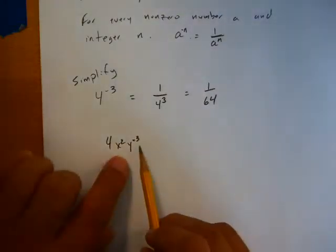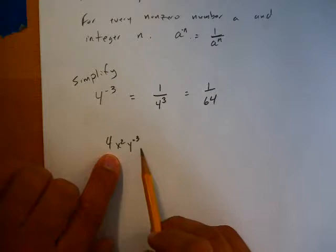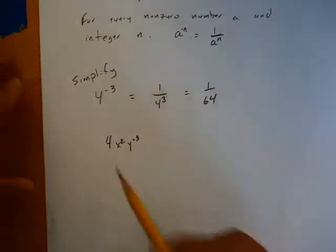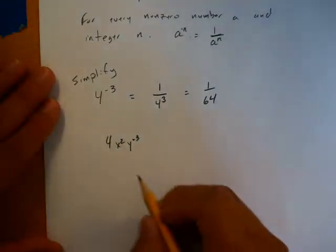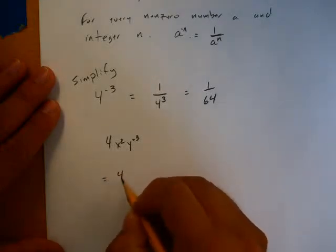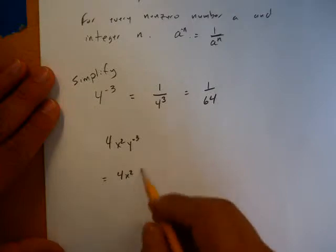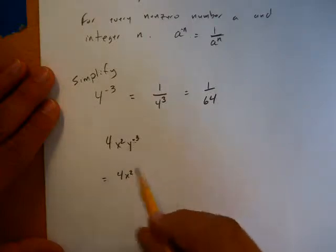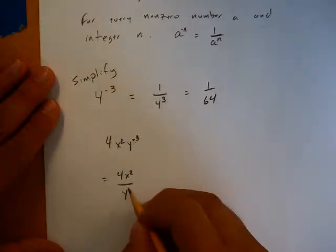Well, now I've got exponents on two of my pieces of this term right here. There's nothing here. So my next line just looks like four. And then the x squared's fine because it's got a positive. And then this guy right here, I've got to move it and lose it. I got y to the third underneath.